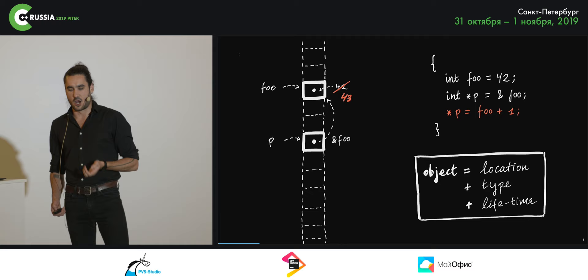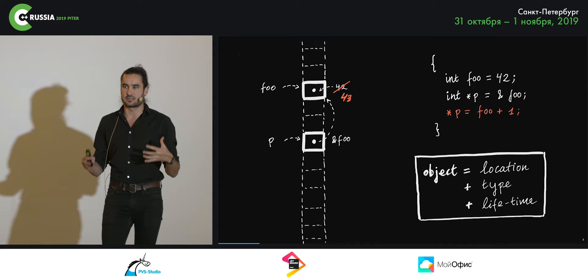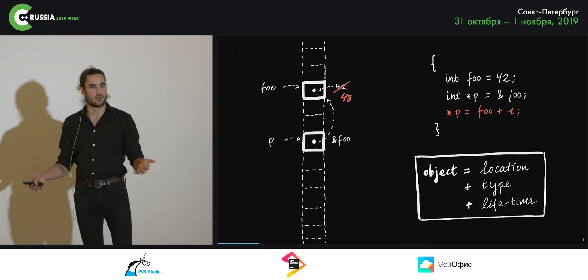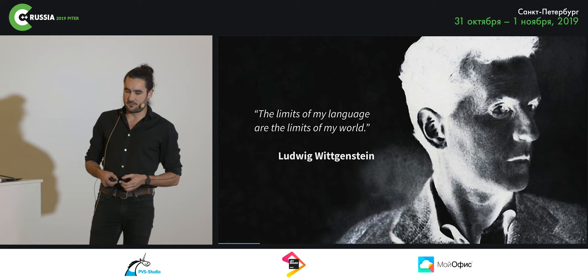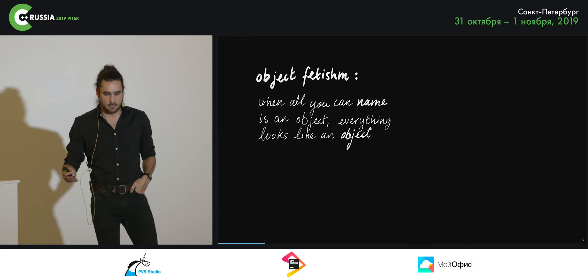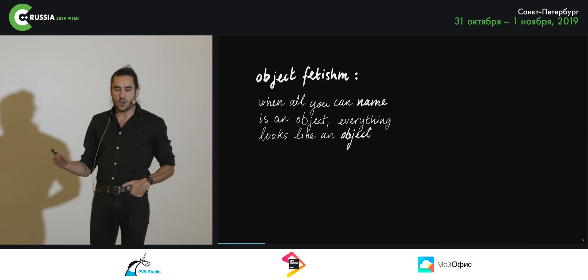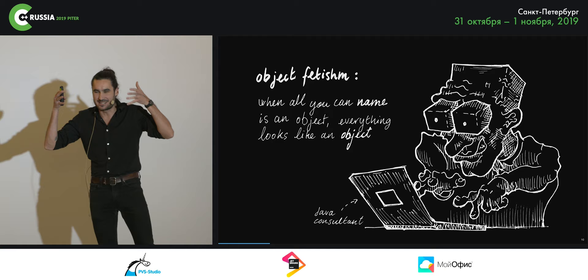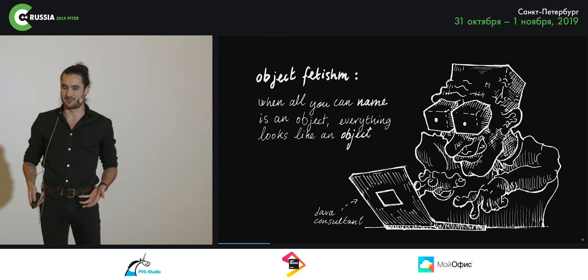The fundamental thing we name in C++ are objects, which are a combination of allocation in memory, plus a type that restricts the kinds of values we can put inside the box, plus a lifetime that tells us when this box is valid. The philosopher Wittgenstein said that the limits of my language are the limits of my world. This explains a phenomenon I'd like to describe as object fetishism — when all you can name is an object, everything looks like an object. We start seeing the world through object lenses instead of abstracting them as value types.